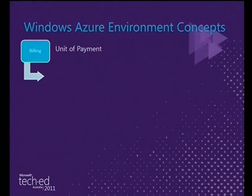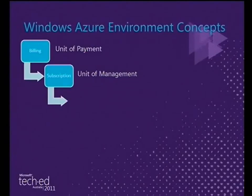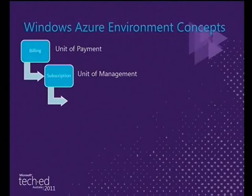At the very top level we have a billing account — everything in Windows Azure ultimately needs to be charged back to somebody. Within a billing account you can have multiple subscriptions, and a subscription is ultimately a management border. Within a subscription you can have one or more Windows Live IDs, but basically everyone with access to that subscription can do absolutely everything: scale up instances, shut down deployments, deploy certificates. So think carefully about who should have access and whether you need different subscriptions for different groups.